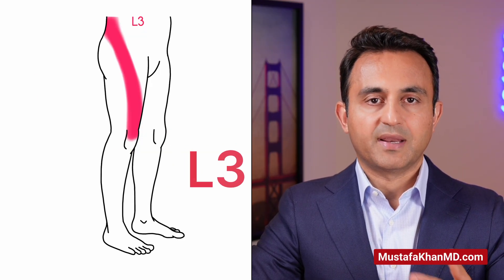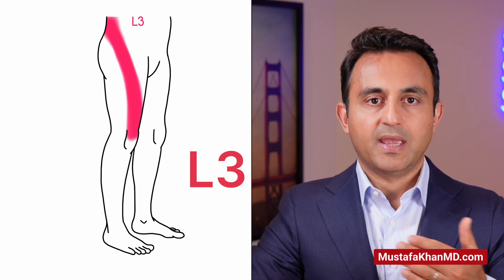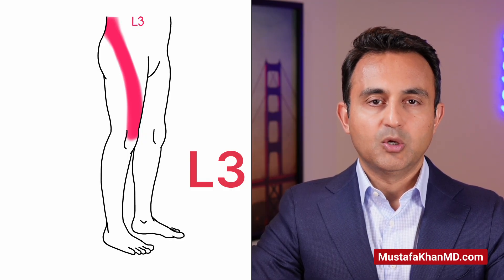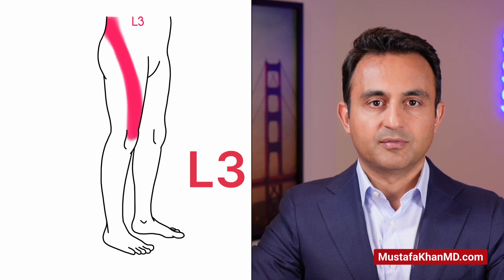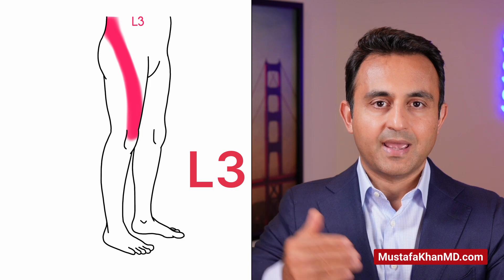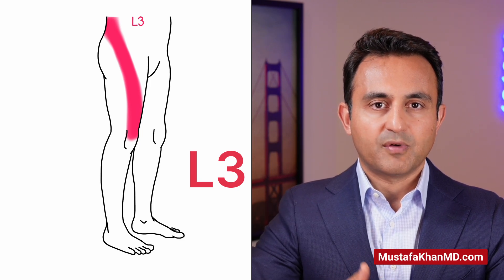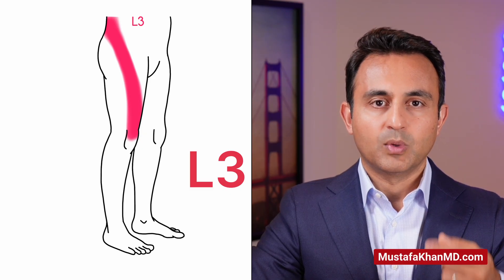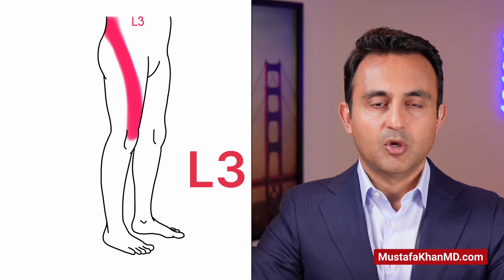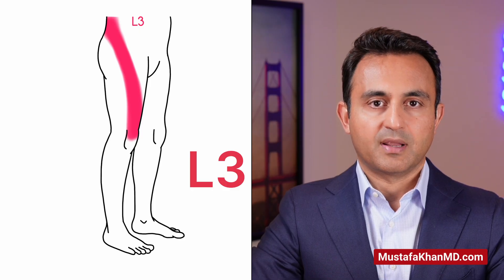Finally, let's talk about radiculopathy affecting the L3 nerve root. Compared to the radiculopathies in the L5, S1, and L4 pattern, L3 radiculopathy is much less common. Patients with L3 radiculopathy typically will have very little or no pain in the buttock itself. Instead, they'll have a radiating diagonal pattern of pain affecting the front of the thigh and stopping at the knee. The L3 radiculopathy will not go beyond the knee, which is how we differentiate it from an L4 radiculopathy.